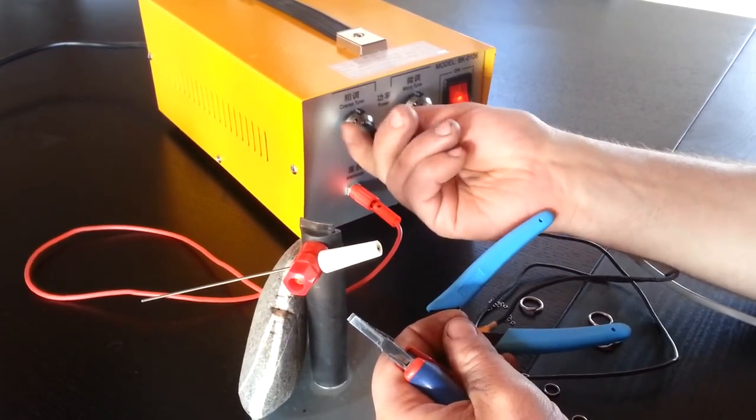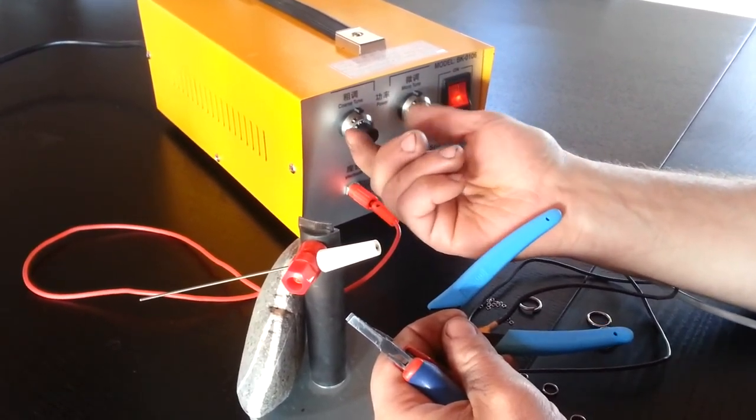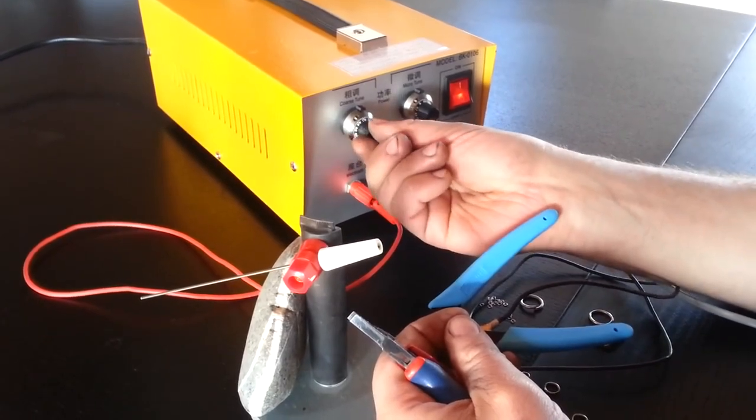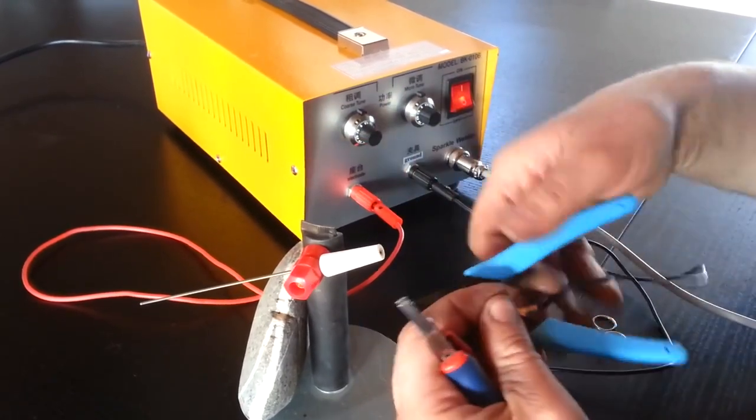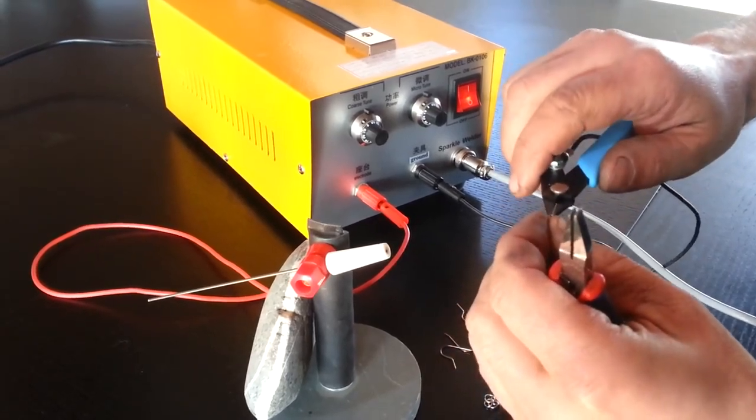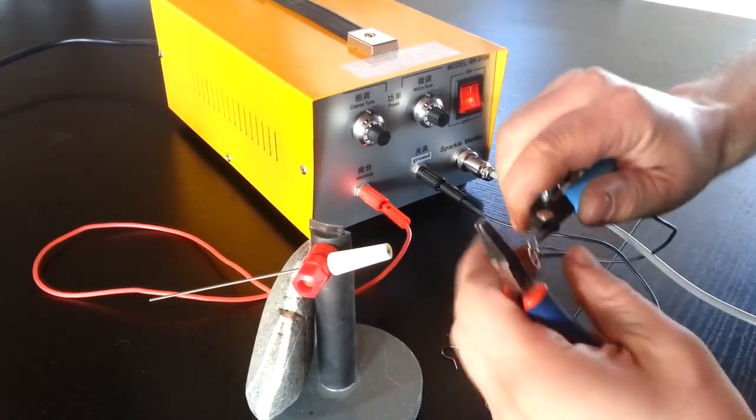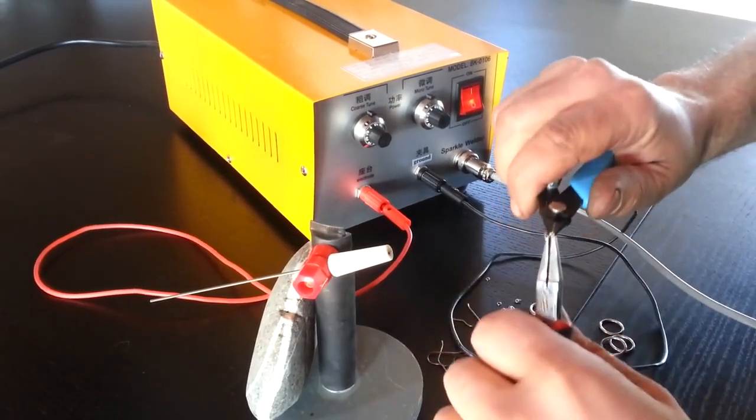Of course the higher the number the more the weld power and as a general rule I'm just starting at five, five, trying a weld and then just adjusting as I see fit for that particular wire size. So I'm doing a 20 gauge stainless steel and I'm thinking five, five is going to be just about right.